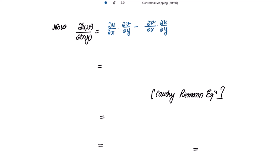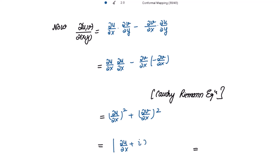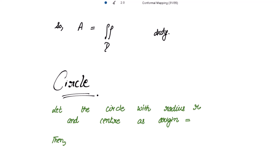The Jacobian ∂(u,v)/∂(x,y) is calculated as (∂u/∂x)(∂v/∂y) − (∂v/∂x)(∂u/∂y). Using the Cauchy-Riemann equations, this simplifies to (∂u/∂x)² + (∂v/∂x)², which equals |f'(z)|². Therefore, the area of the domain in the w-plane is equal to the double integration over D of |f'(z)|² dx dy.